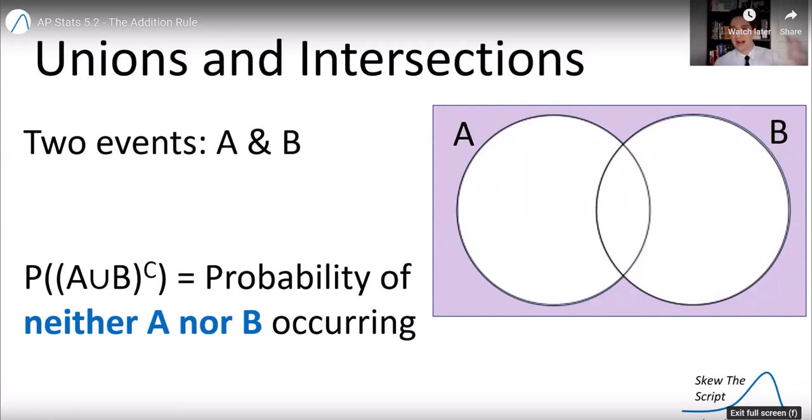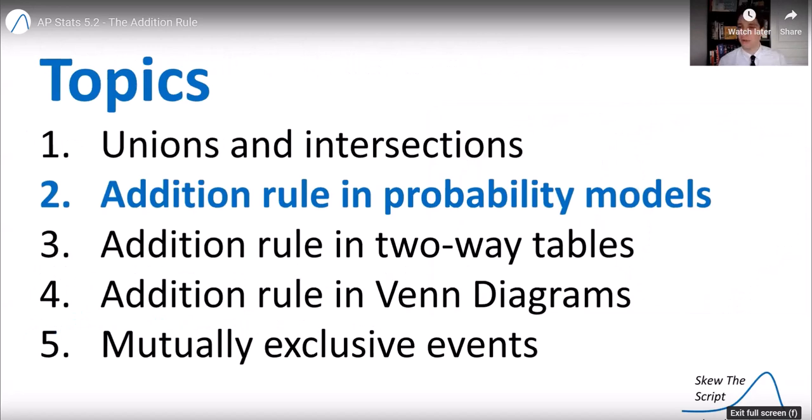Lastly, if you look at the complement of A or B, this is the probability that neither A nor B occur. It's not A or B. So it's everything outside of these Venn diagram circles. So that's some of the notation we're going to be using today and going forward in our probability section.